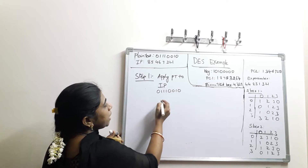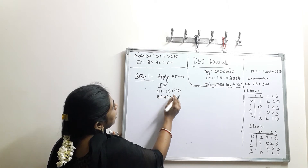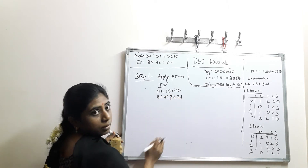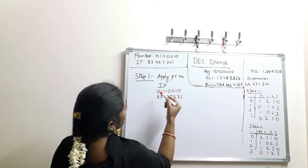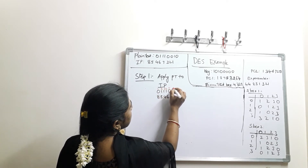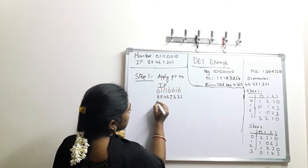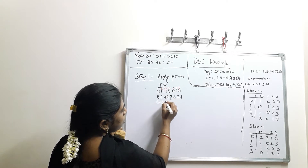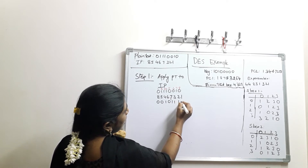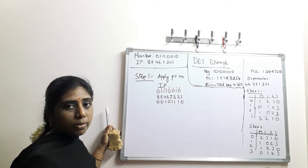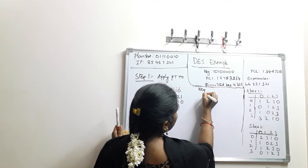The initial permutation values are 8, 5, 4, 6, 7, 3, 2, 1. Now apply accordingly: the 8th bit is 0, 5th bit is 0, 4th bit is 1, 6th bit is 0, 7th bit is 1, 3rd bit is 1, 2nd bit is 1, and 1st bit is 0. So the output from the initial permutation is 0, 0, 1, 0, 1, 1, 1, 0. Now simultaneously apply the key values.